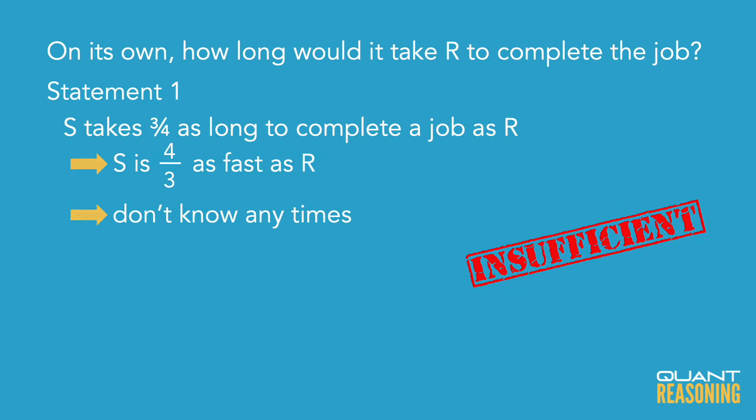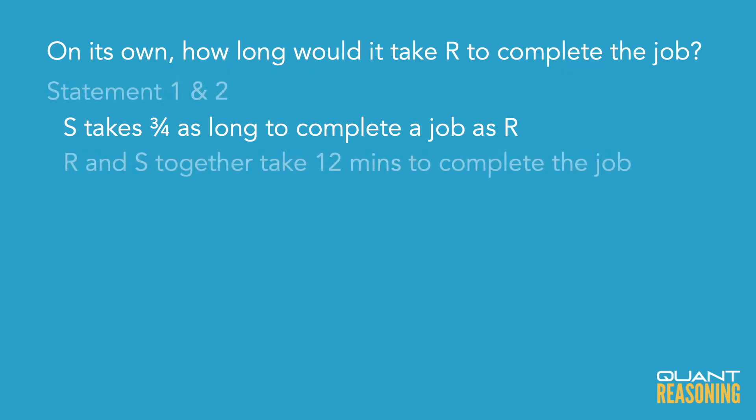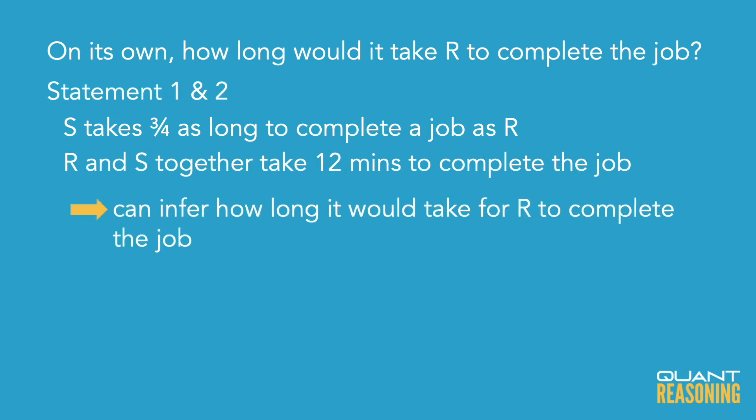When we combine these statements, we know how long machine S takes on its own, and we also know the ratio of the speeds of the two machines. So yes, we could infer how long it would take machine R on its own, and therefore the correct answer is C.